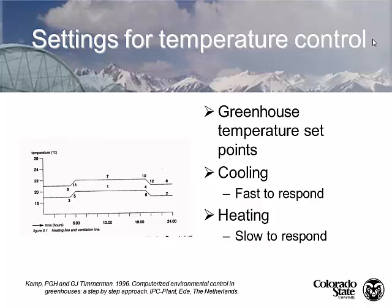What some people will do is set their cooling system to respond quickly — setting the set points closer on the cooling side. These numbers represent deviations from the set point. We'll often design our heating system to respond more slowly, with wider gaps, because the thermal mass of benches, floors, and plants absorbs heat and we want the heating system to respond slower.